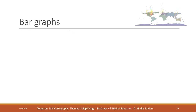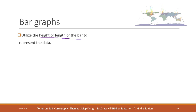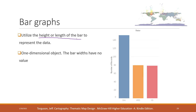Now let's look at the bar graph or bar chart. Bar chart is very common — it uses the height or length of the bar to compare values in different categories. It is one-dimensional because the widths normally have no values. Here is one example showing the number of records by different readers, using a bar graph.